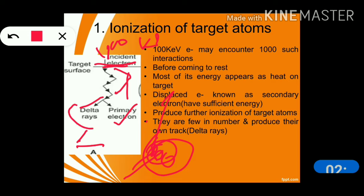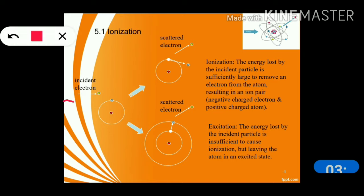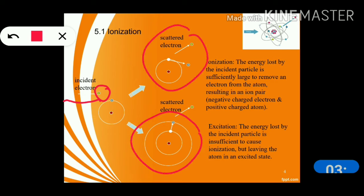These delta electrons are few in numbers and they will produce their own track. This is the primary electron; this is the secondary electron. With each repeated interaction, energy is transferred and direction keeps changing, giving us delta rays. This secondary electron comes from the incoming electron's collisions.